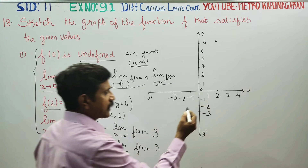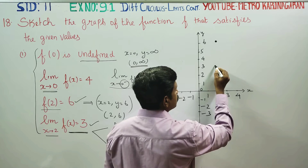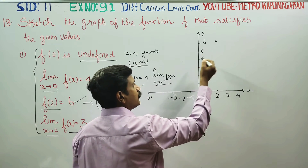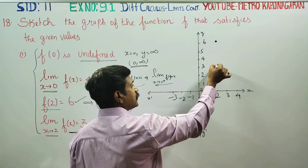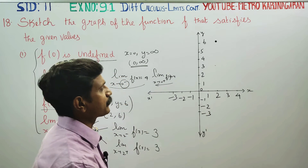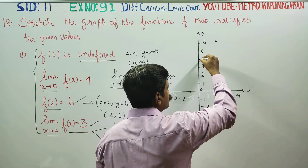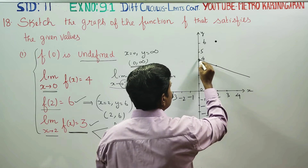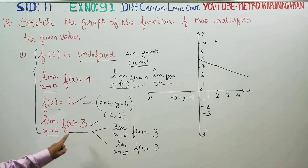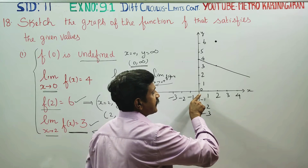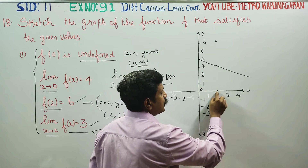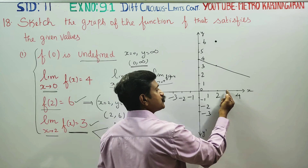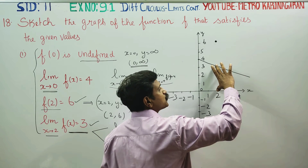This is a very important point. One point is at (1, 4) — this is a VIP point. As x approaches the left-hand side of 2, you can see a height of 3 units — that is y = 3. When you approach the right-hand side also, you can see a height where y is equal to 3.